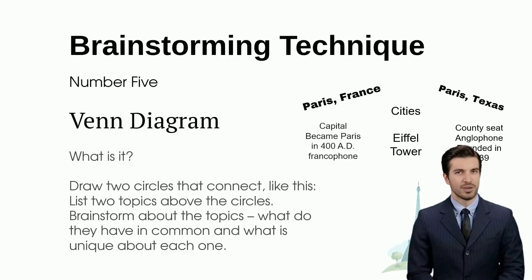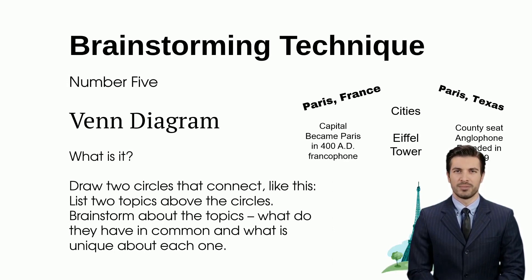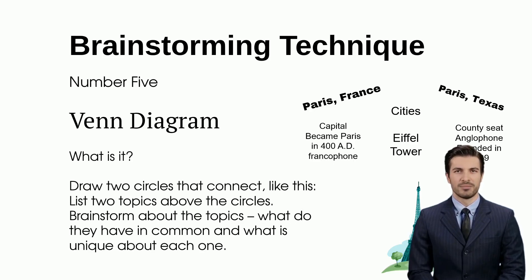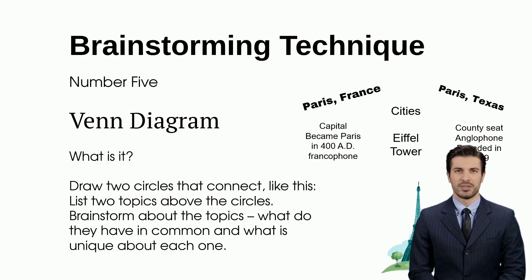A Venn diagram is an excellent visual tool for comparing and contrasting two topics. For example, Paris in France and Paris in Texas are both cities. Paris, France is French-speaking, has the Eiffel Tower, and is the capital of France, whereas Paris in Texas is a county seat and English-speaking.